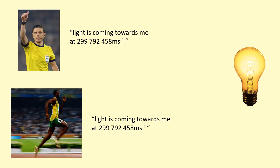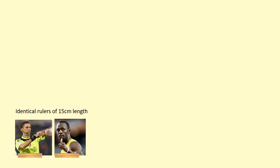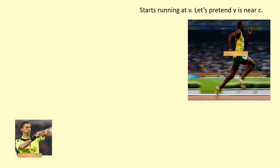One of the solutions to the problem of the invariance of the speed of light was time dilation. I'm going to go to the second one now. I want to imagine Usain Bolt and the lineman standing with a 15 centimeter ruler, identical rulers, and then Usain Bolt starts to run near the speed of light.